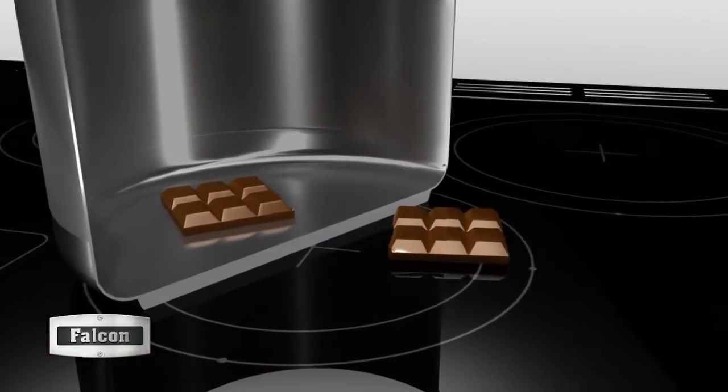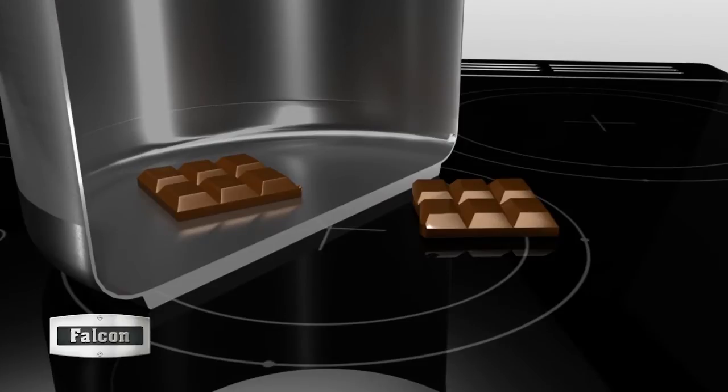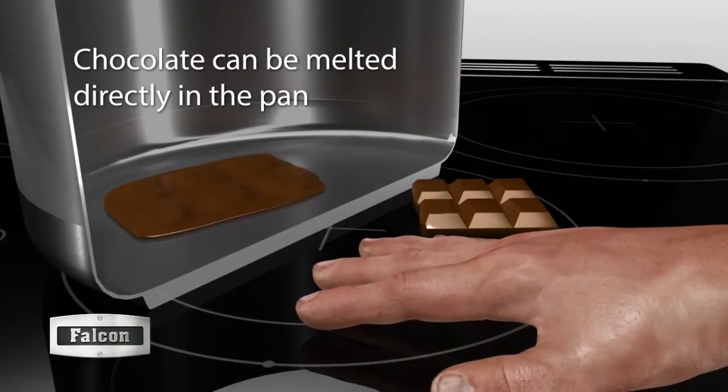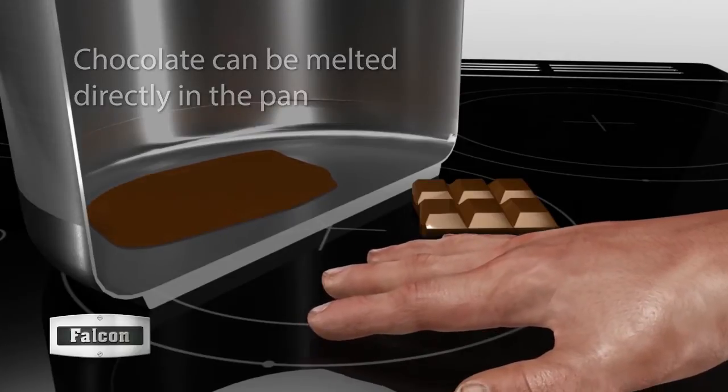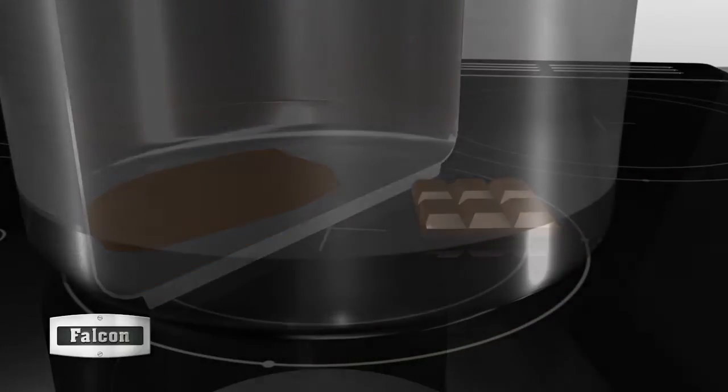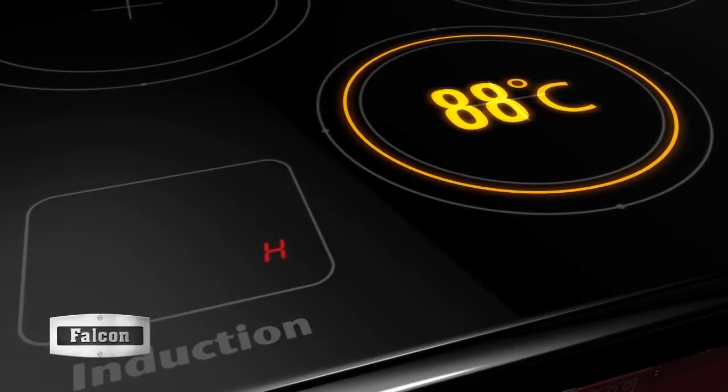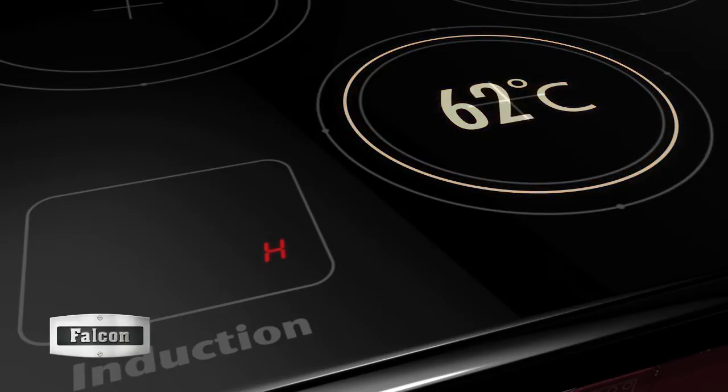If you were to slice a pan in half and turn on the induction hob, the pan base would heat up instantly while the glass next to the pan would remain cool to the touch. Over time, heat will be transferred from the pan base into the glass. The induction hob will indicate if the glass is hotter than 60 degrees, so you know when it's too hot to touch.